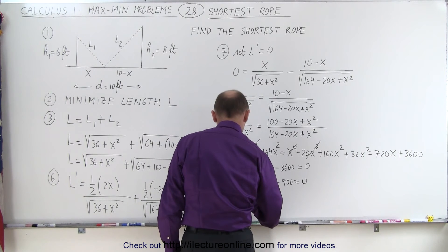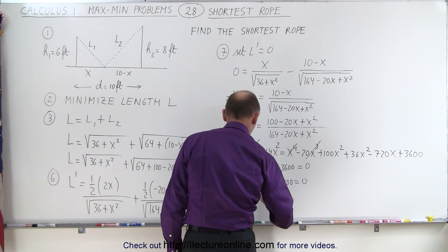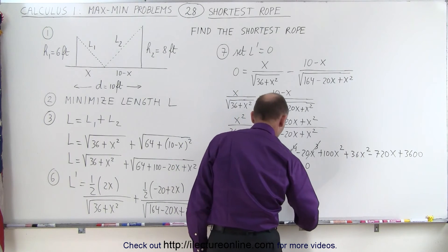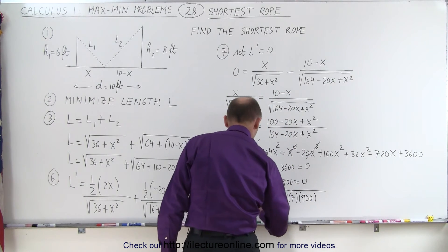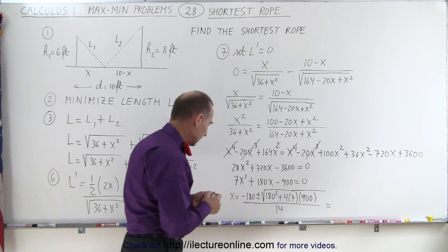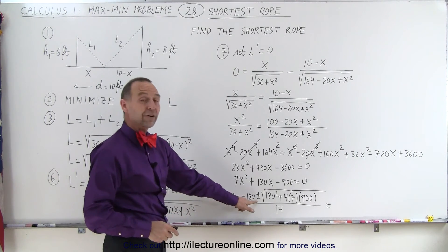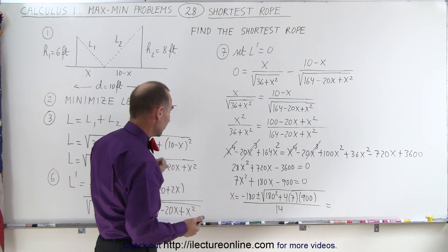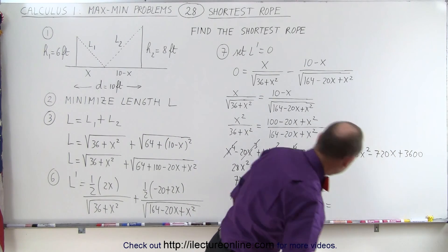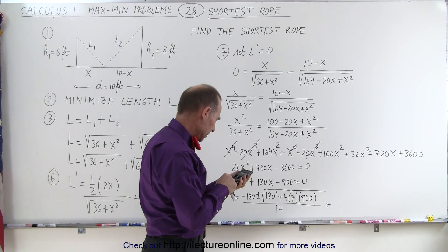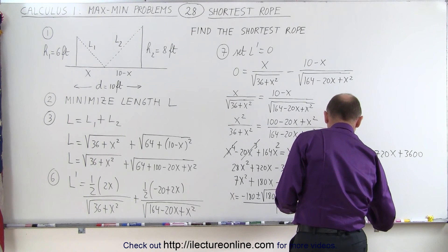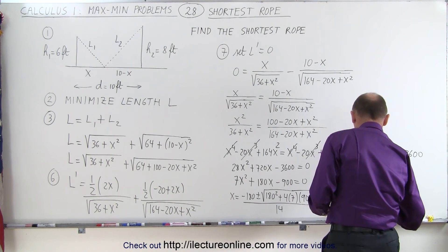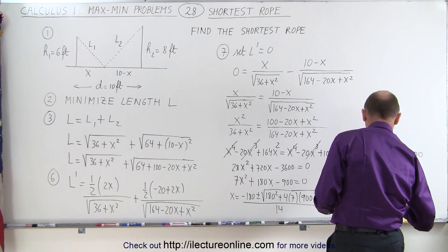We solve using the quadratic formula: x equals minus 180 plus or minus the square root of 180 squared plus 4 times 7 times 900, all divided by 14. We discard the negative option since that gives a negative value, which doesn't make sense here. Using only the positive option: 180 squared plus 4 times 7 times 900, take the square root, that's 240. So x equals minus 180 plus 240, divided by 14, which equals 60 divided by 14, which equals 30 divided by 7.